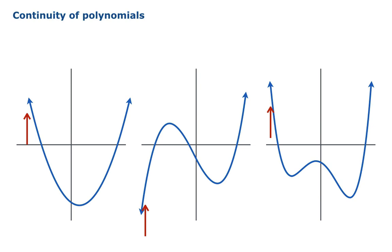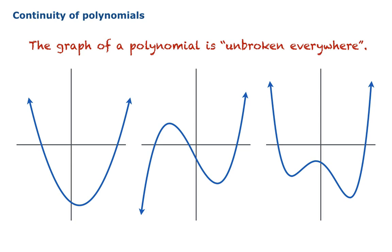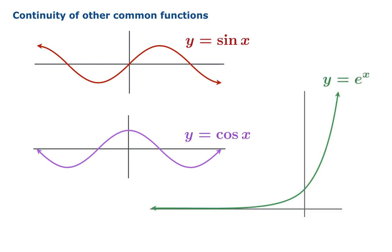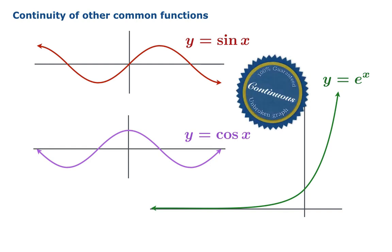No matter what kind of polynomial you graph — second, third, fourth degree — you'll notice that the graph of a polynomial is unbroken everywhere; or better said, it's not broken anywhere. And as it turns out, there are many other functions that are continuous at every argument on the number line. Sine, cosine, and e to the x are such functions. It would be hard to prove continuity at the moment, but if we just wait a little while, we're going to have much more powerful proofs that these functions are continuous. For now, we'll just take it as a fact that they're certified continuous, and we'll use that fact in the near future.